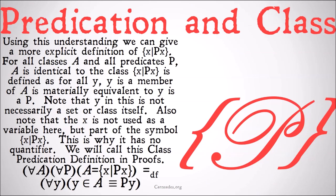Using this understanding, we can give a more explicit definition of X-bar PX. For all classes A and all predicates P, A is identical to the class X-bar PX, defined as: for all Y, Y is a member of A is materially equivalent to Y is a P. Note that Y here is not necessarily a set or class itself. Also note that the X is not used as a variable, but is part of the full symbol X-bar PX. This is why it has no quantifier — it's not actually a free variable, it's just part of a symbol. We're going to call this the class predication definition in proofs.